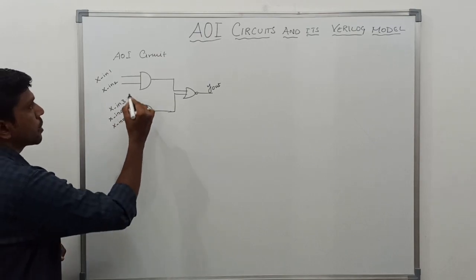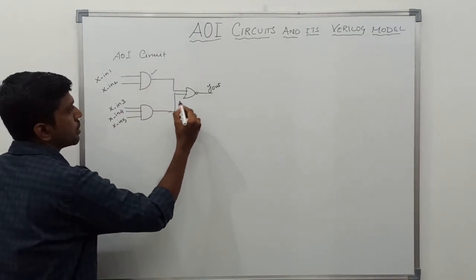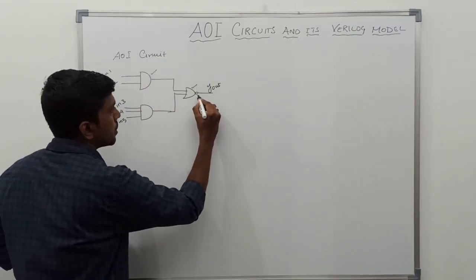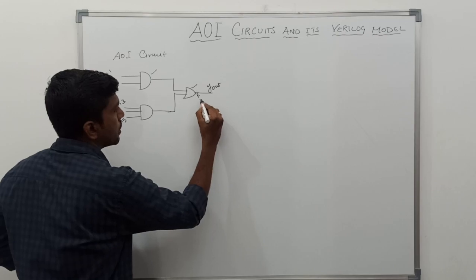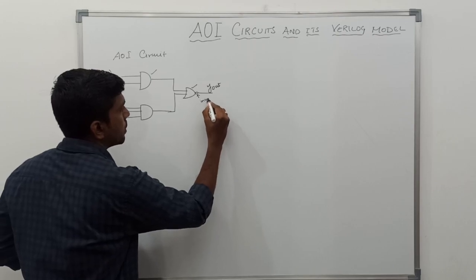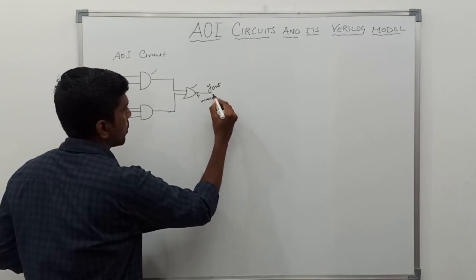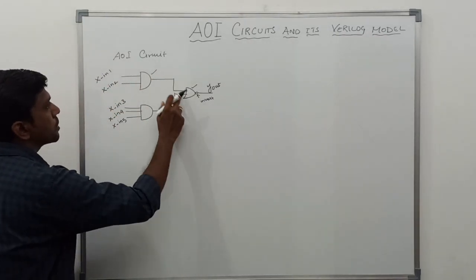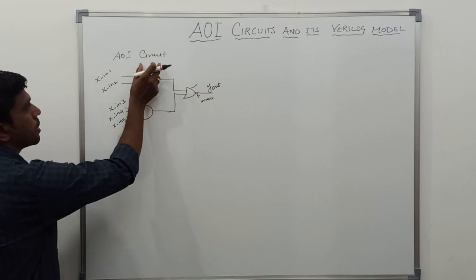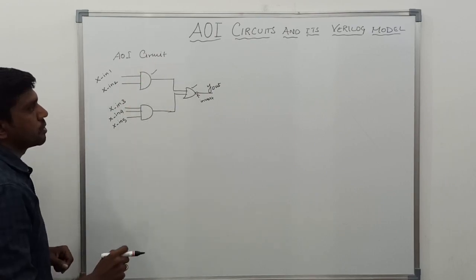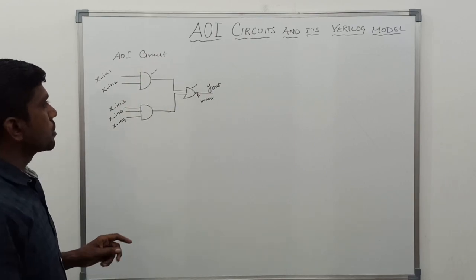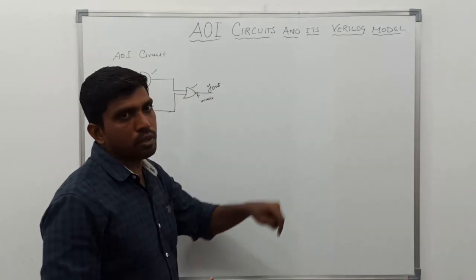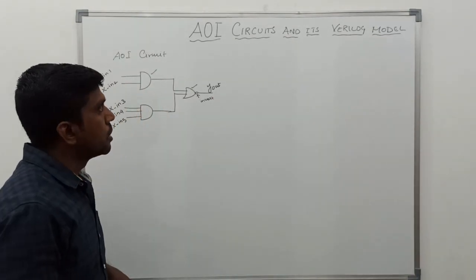In this cycle, we have the AND operation and OR operation, and this one is the inversion — the NOT operation. So these three operations are implemented in a single cycle. Next, I am going to write the Verilog HDL code.